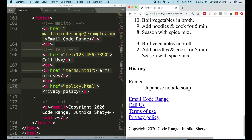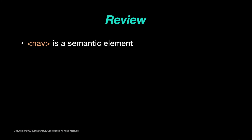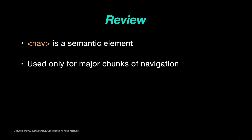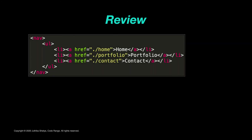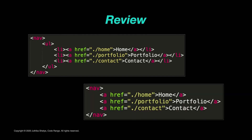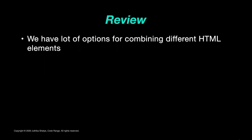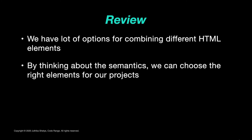So that's the nav element — a semantic element used only for major chunks of navigational links. It usually contains a list of links, but not always. There's not one right way to build it; it depends on the type of content you have. We have a lot of options when we start combining different HTML elements together. By thinking about the many elements and how they combine to give semantic meaning to our content, we can start to make the right choices of HTML elements for our projects.